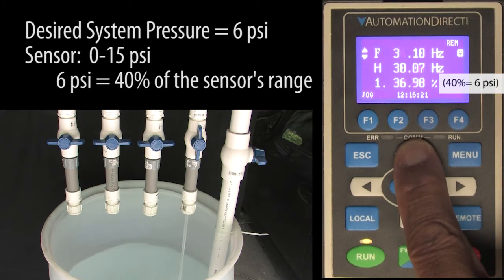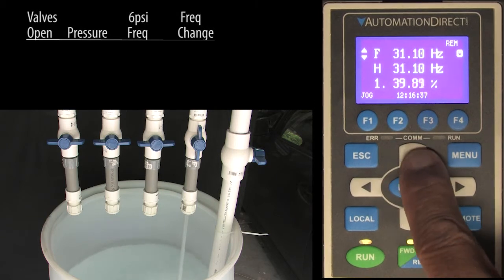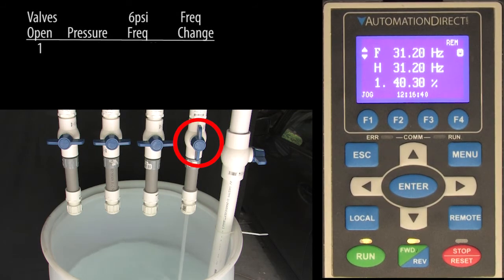Let's increase the drive frequency until we get the 6 psi or 40% we want. So with one valve open, we need this much drive frequency to get 6 psi.